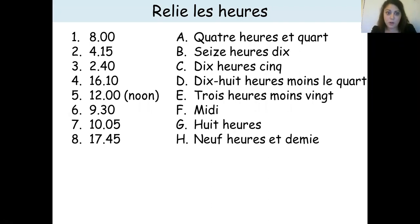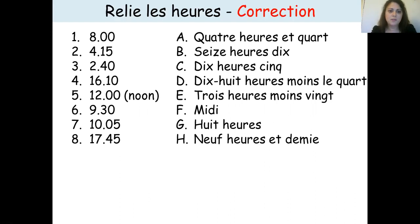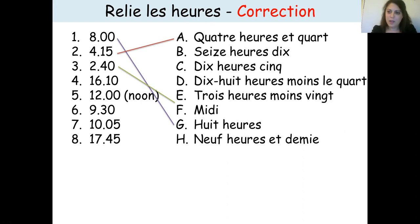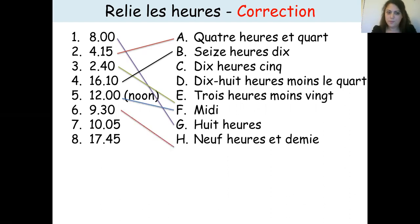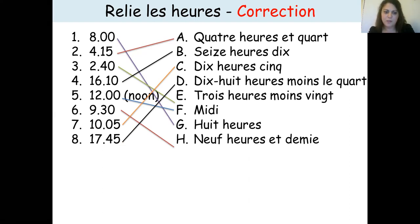Now on to correction — please take a red pen to correct your work. 'Huit heures' is G; 4:15 is 'huit heures et quart'; 2:40 is 'trois heures moins vingt' — three hours minus 20. Don't forget we have the 24-hour clock in French: 16:10; noon is 'midi'; 9:30 is 9h30; 10:05 is 10h05; and quarter to six is 18h00 — 18 hours minus the quarter. Give yourself a score.